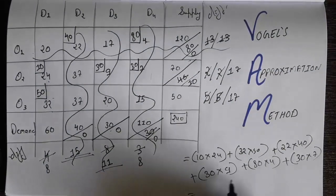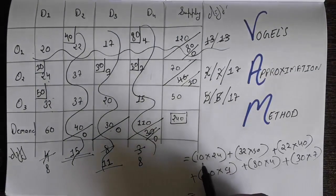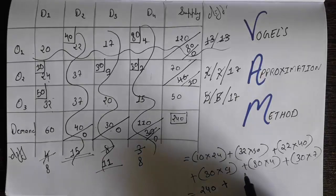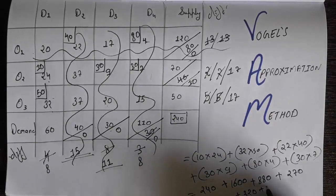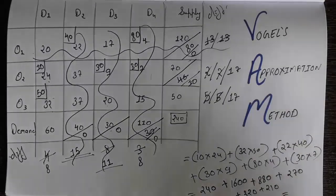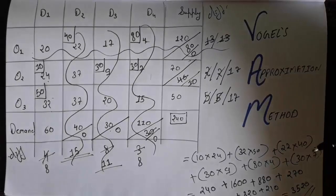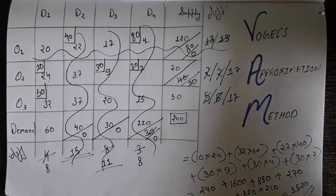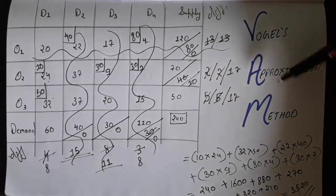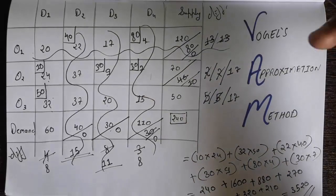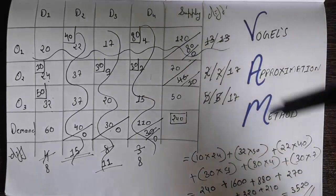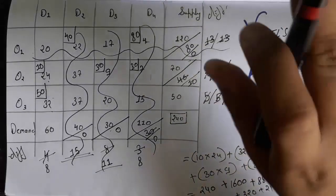We calculate the final answer by multiplying and summing all allocated cells. The first product gives 240, and the final total cost comes to 3520. This is how you solve the transportation problem using Vogel's Approximation Method. Hope you liked the video — press the like button, leave any questions or suggestions in the comments, and subscribe for more. Bye!